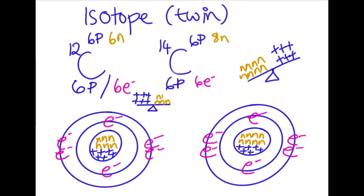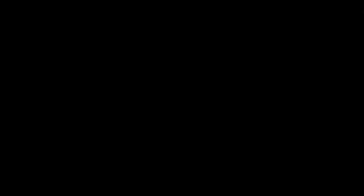So hopefully what you can see is that your carbons are still carbons. What makes them a carbon is their six protons and their six electrons. But because they are a twin of each other, one of your carbons has got six neutrons in its mass number and the other one's got eight.